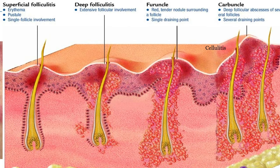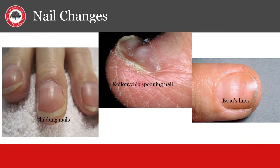Hair follicles can become infected with bacteria causing folliculitis, and if left untreated, become furuncles. This can develop into a carbuncle or multiple furuncles at once. The redness on the surface from a bacterial infection is called cellulitis. Erythema means redness and edema means swelling. Changes in fingernails can tell us if diseases are present. We already showed pitting nails with psoriasis. Clubbing is seen in respiratory diseases like COPD and emphysema. Spooning is seen with iron deficiency anemia. Beau's lines are seen with nail trauma or with Raynaud's phenomenon.